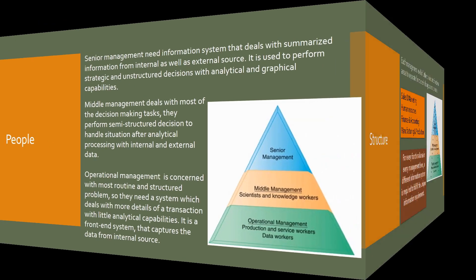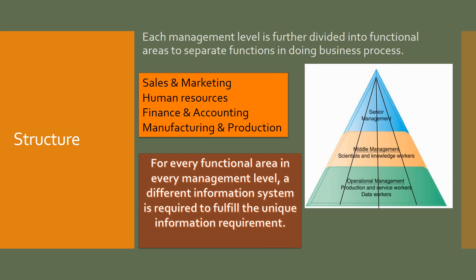Dividing an organization into levels is not enough; we have to divide it further. To perform any business operation, it can be divided into four functional areas: sales and marketing, human resources, finance and accounting, and manufacturing and production. Every organizational level can be divided into these four functional areas. In other words, the information system required to perform any functional area at a specific organizational level has different data requirements, so we need a unique information system for each.